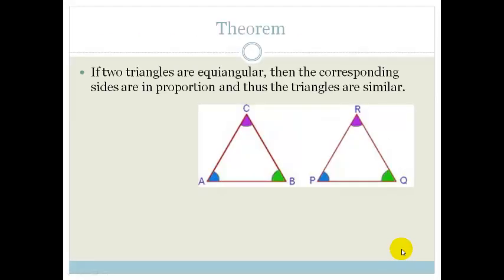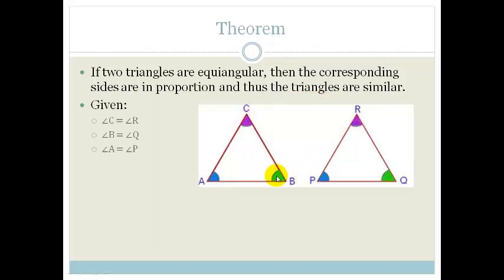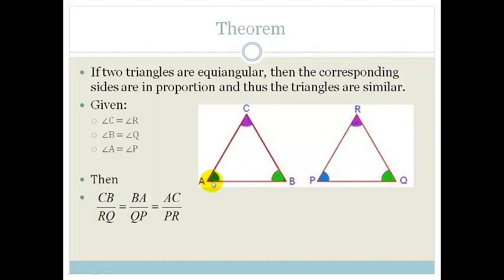The theorem states that if we've got two triangles that are equi-angular, then the corresponding sides are in proportion, and thus the triangles are similar. So what they're saying is that if we're given that angle C equals angle R, and angle B equals angle Q, then angle A equals angle P. Then we can say that CB over RP is in proportion to BA over QP, which is in turn equal to AC over ER. And because these are equi-angular and because their sides, when taken in order, are in proportion, then we can say that these two triangles are similar.